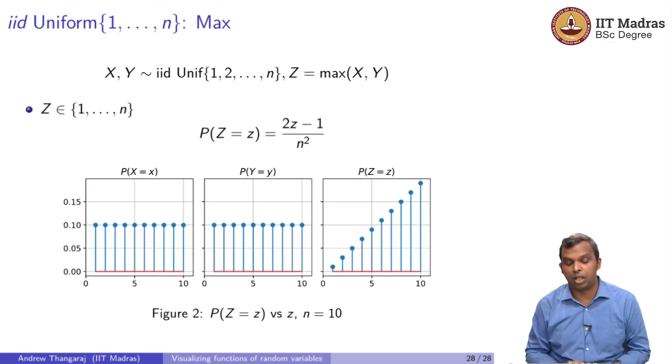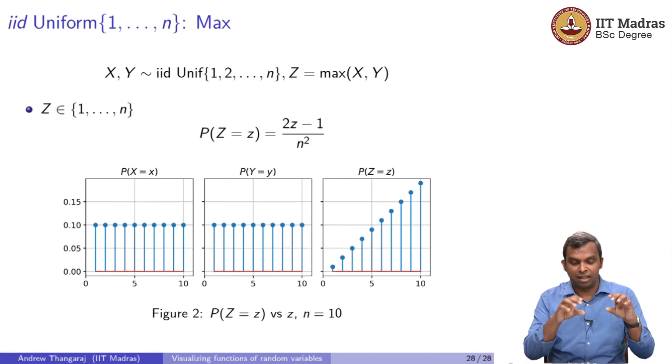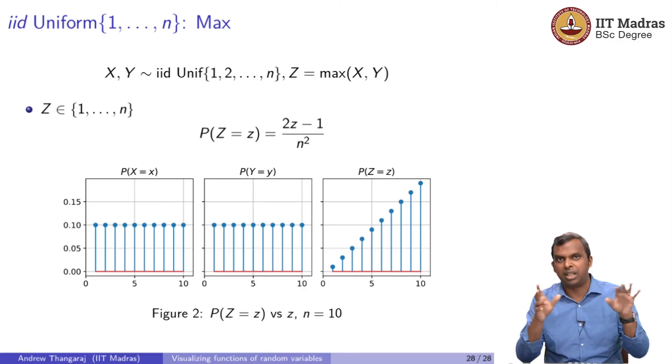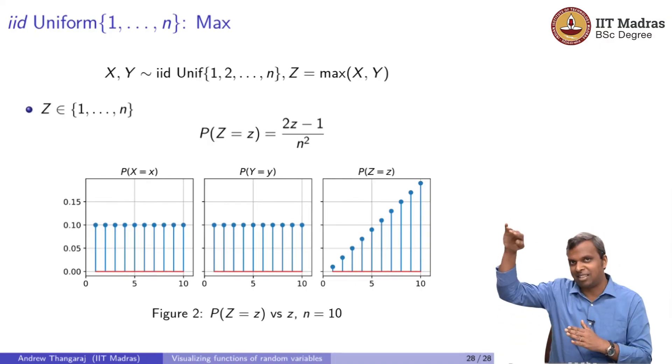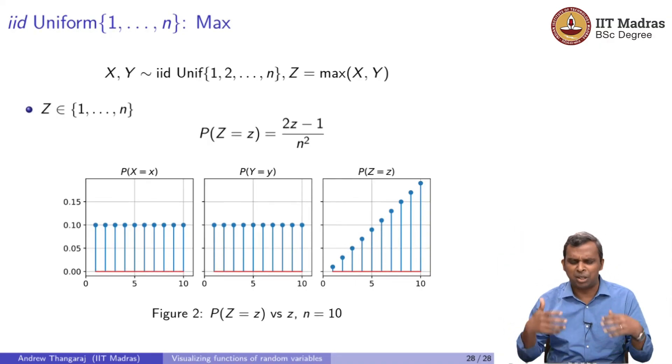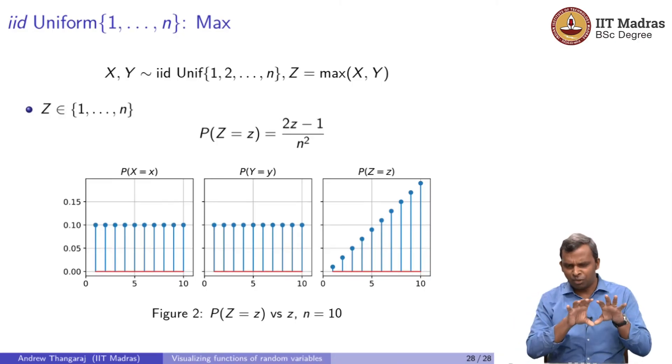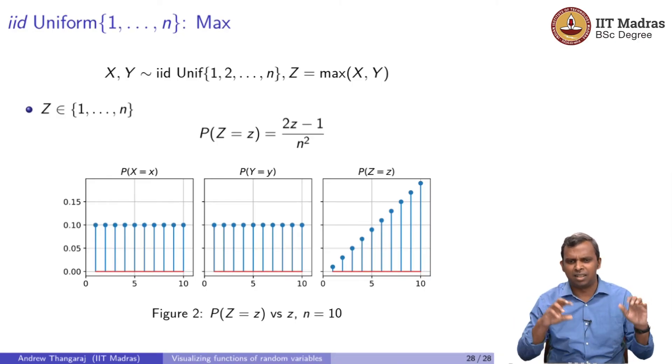If you do that, you can have this wonderful visualization. X equals x is flat from 1 to 10. Y equals y again is flat from 1 to 10. These are independent uniform distributions. N equals 10 is the illustration, and notice how max has this sort of shape. These kinds of shapes are good to remember, that when you have uniform distributions, sum goes to a triangle and max has this kind of upward slope coming in.